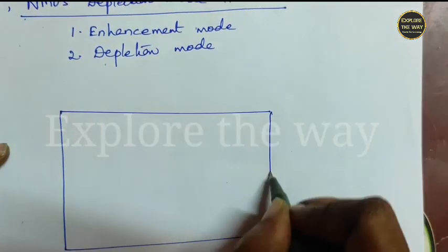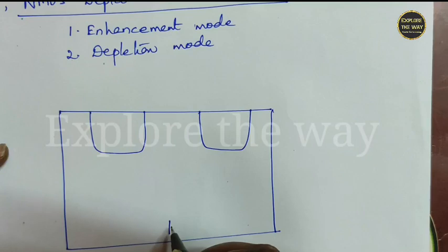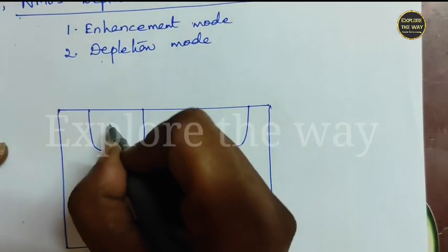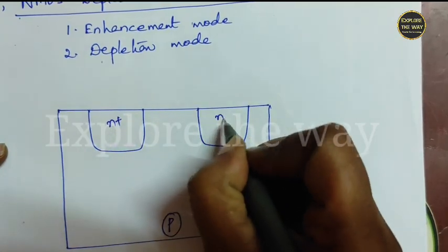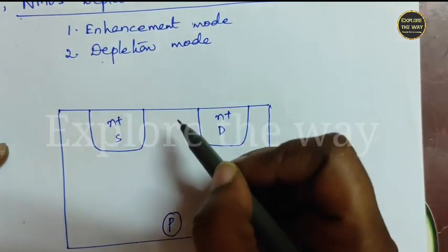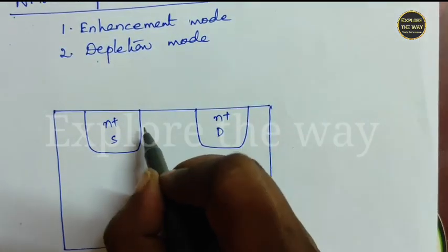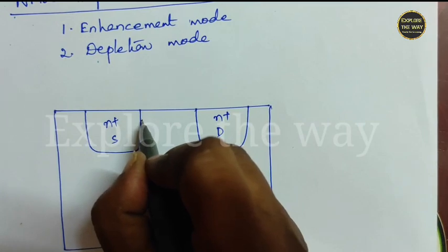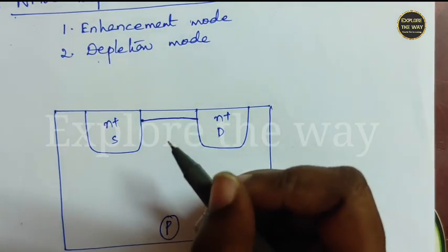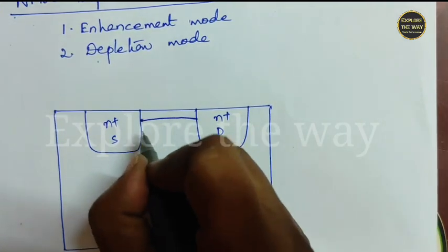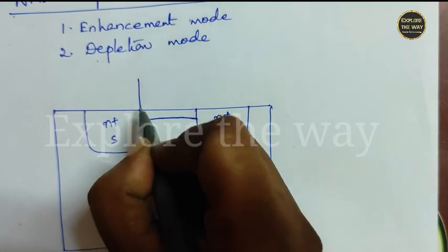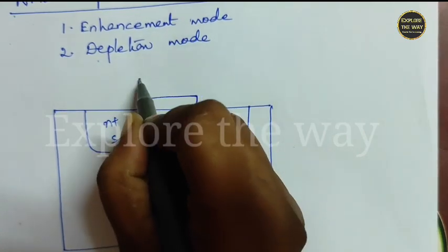NMOS transistor starts with P-type substrate. Here, source and drain are of N+. Coming to the gate region, before fabrication of gate structure, here a very thin channel region can be implanted by using ion implantation process. This channel is N-type channel. And this is the gate region.